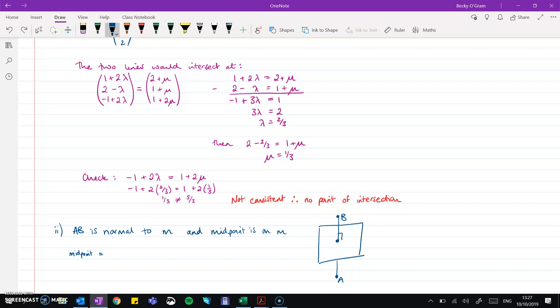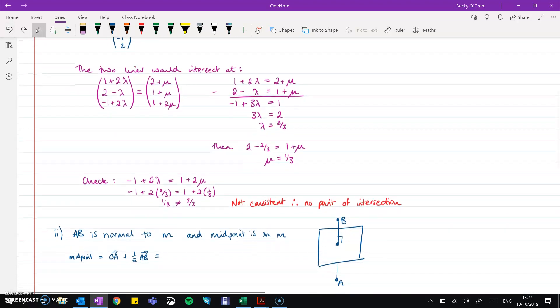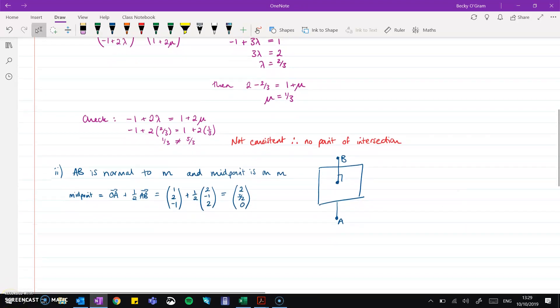Now to get that midpoint we would go from the origin to A and then half along the direction of AB. So we had AB from the first part of this question just up here, the (2, -1, 2). So we can put in the position vector of A, add on half the vector that goes from A to B, and we get our midpoint is (2, 1.5, 0).